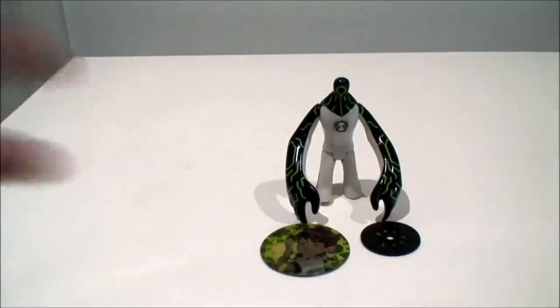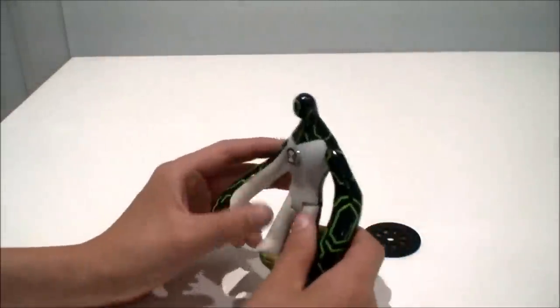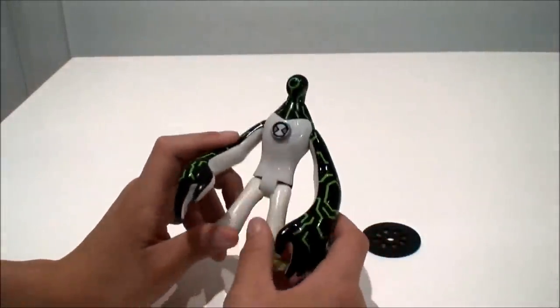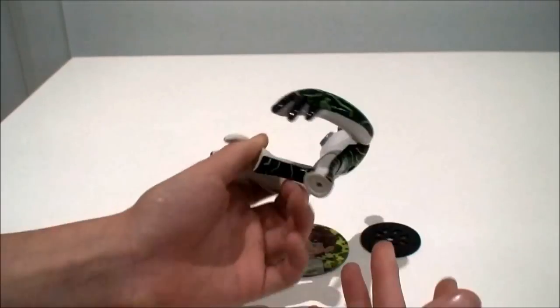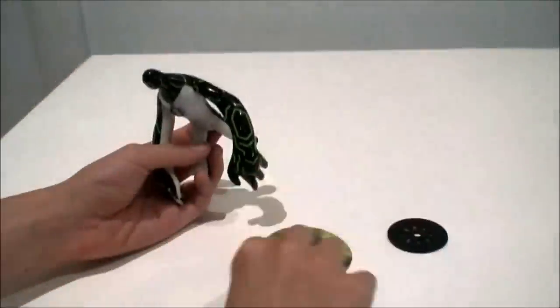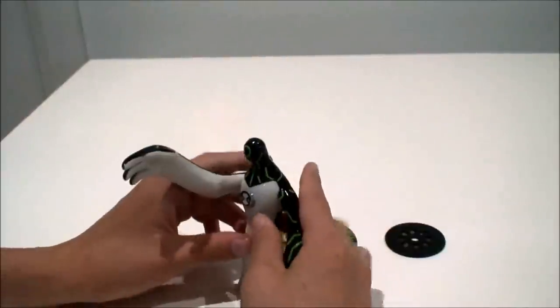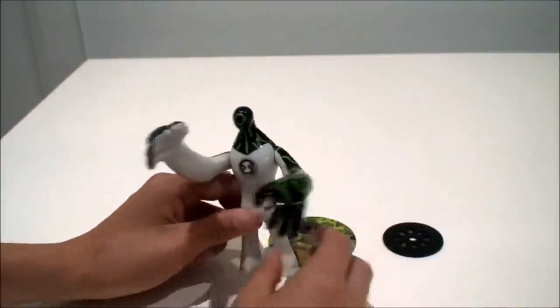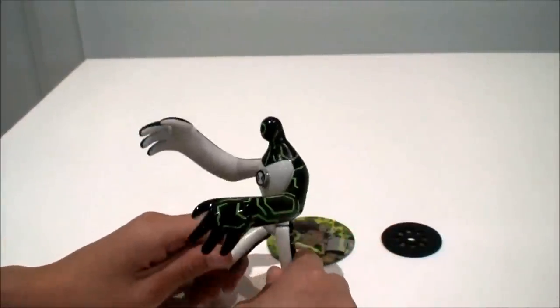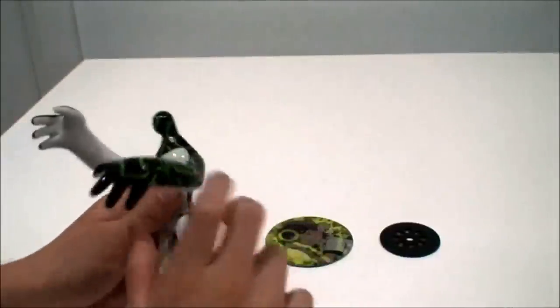Alright, so next is Upgrade. So Upgrade, you know, he's like a Galvanic Mechamorph from Galvan, from Galvan B I think. Let's go check, yep, Galvan B. And he can like morph with any electronical device, and he can change it like use it for battle or anything, whatever he wants to do.